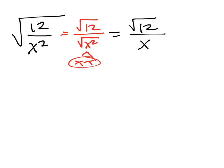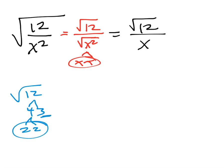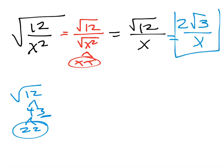I'm not quite done yet because I can simplify the square root of 12 — it's not a perfect square but it simplifies: it breaks down to 4 and 3, so a 2 comes out and a 3 stays in. That gives 2 radical 3 over x as the simplified answer.